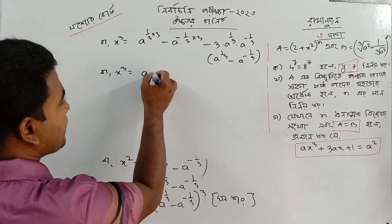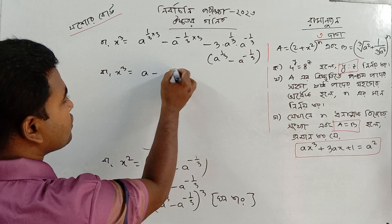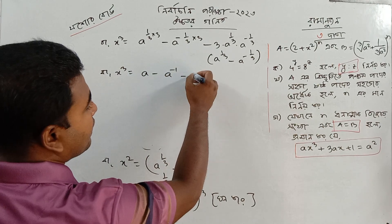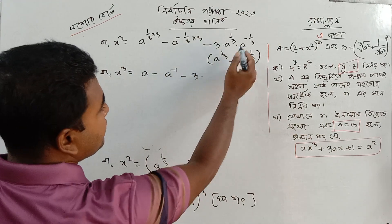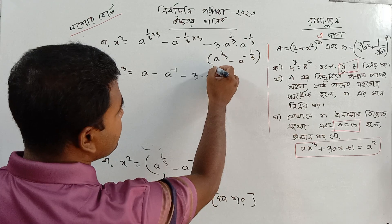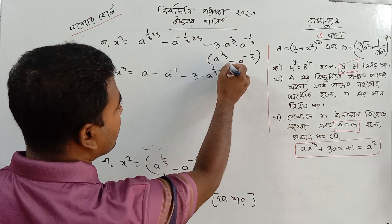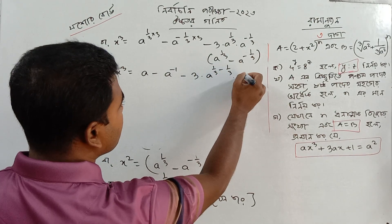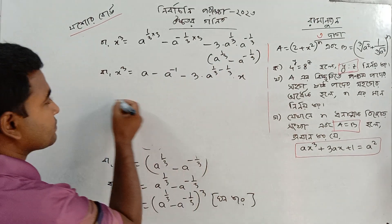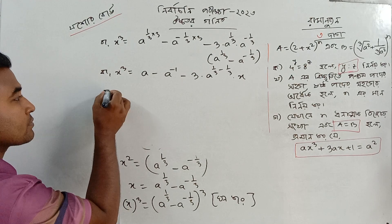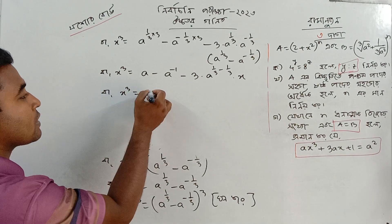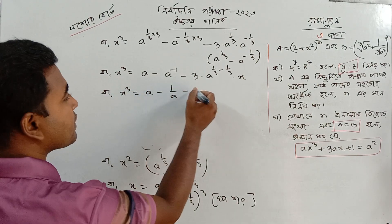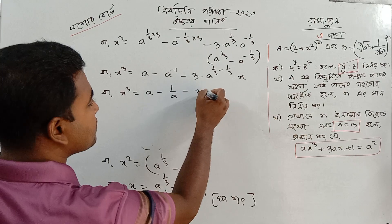3C3 times 3a minus a minus a minus 3, i0 times x. That is a minus 1 by a minus 3.